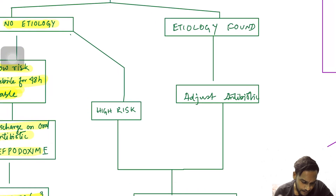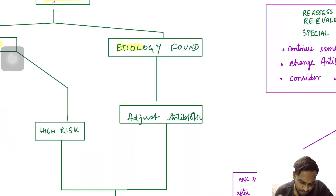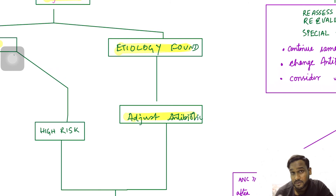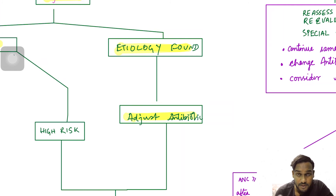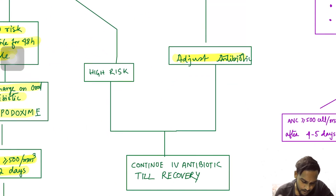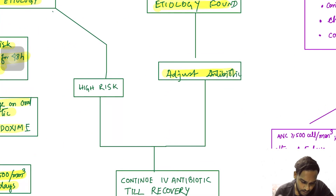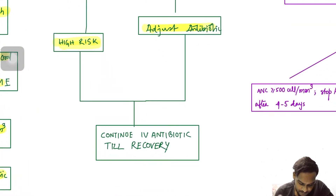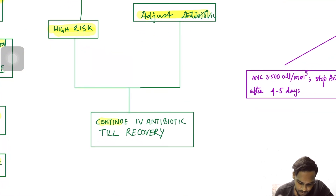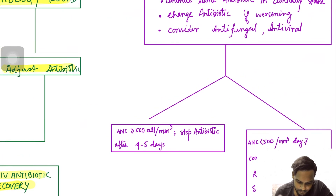If a definite etiology is found, adjust the antibiotic accordingly — maybe there is a fungal pathogen or something else, and you should adjust accordingly. If the child is high risk, continue antibiotic therapy until recovery.